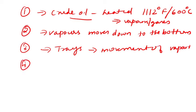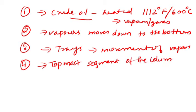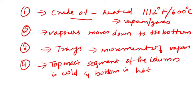Fourth step: the topmost segment of the column is cold, while the bottom is hot. Therefore, the vapor rises in the column and gets cooled. First you heat the crude oil at 1112 degrees Fahrenheit or 600 degrees Celsius, it forms vapors or gases, the vapors move down to the bottom of the column, and there are trays to allow the movement of vapor. The topmost part of the column is cooler than the bottom.